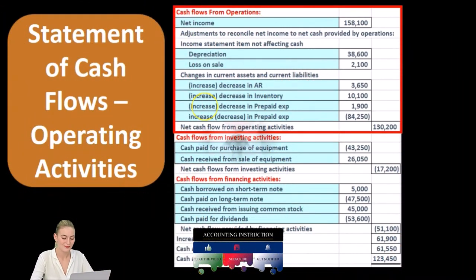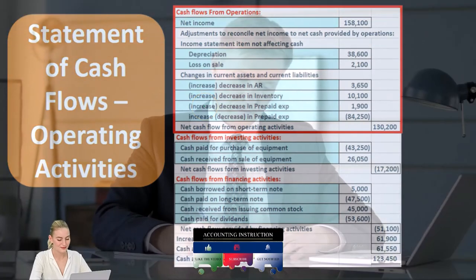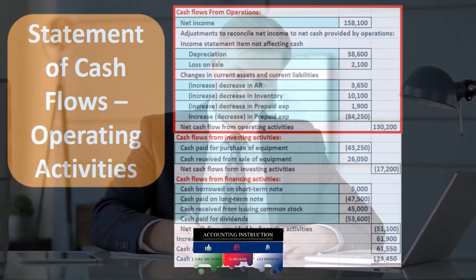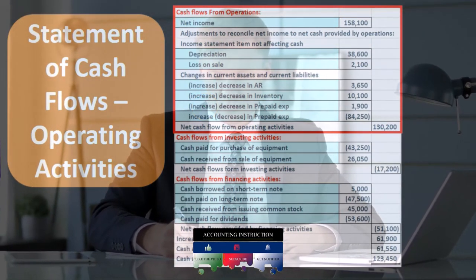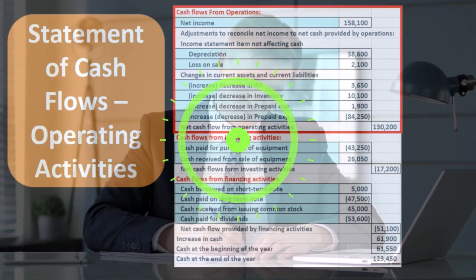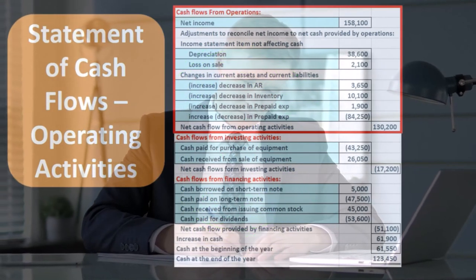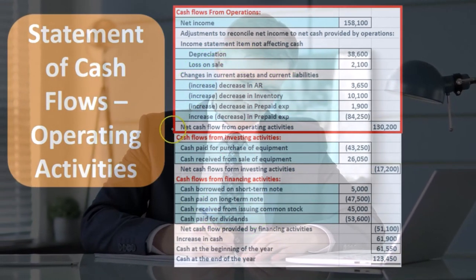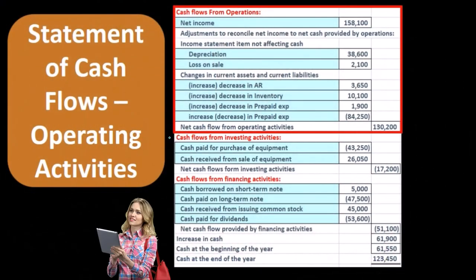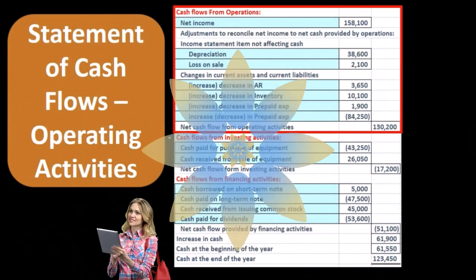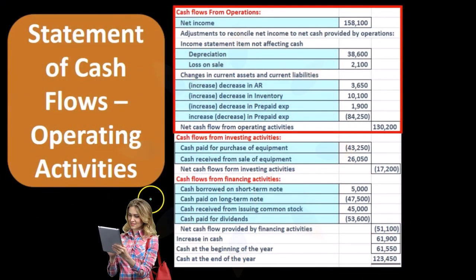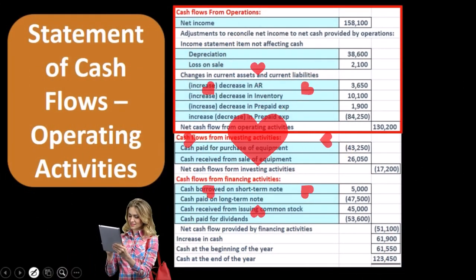It's important to note that the difference between the direct method and indirect method is only applicable to the cash flows from operations. The two methods will be the same for the cash flows from investing activities and the cash flows from financing activities.